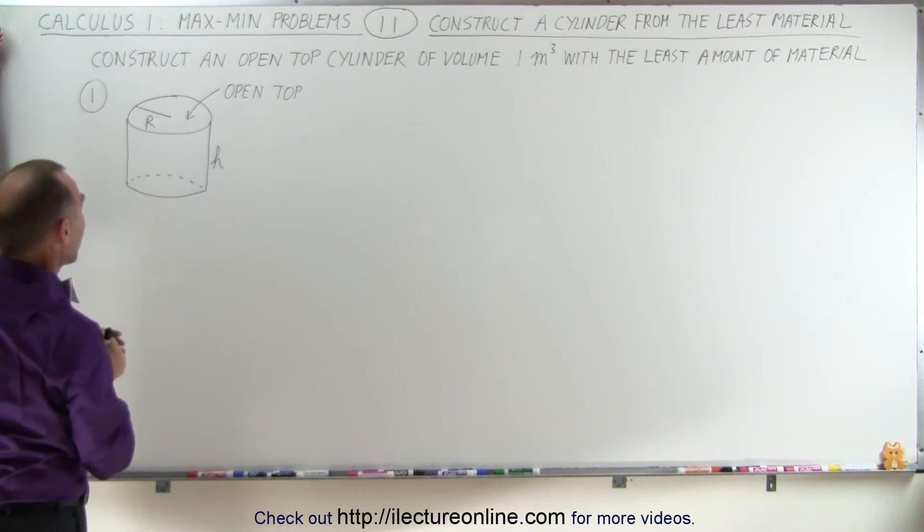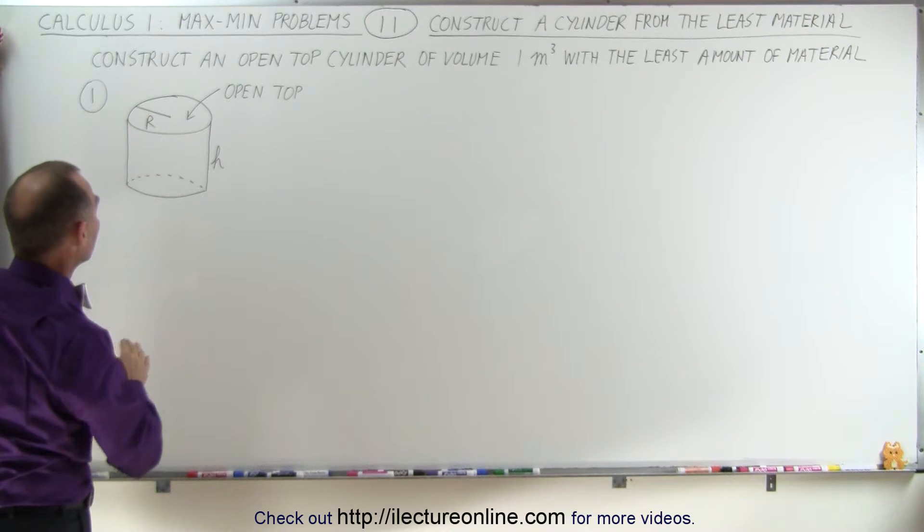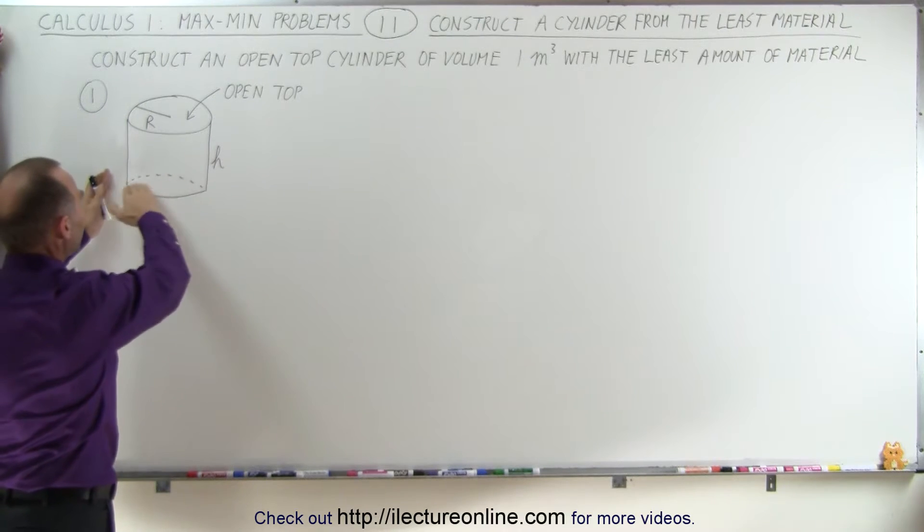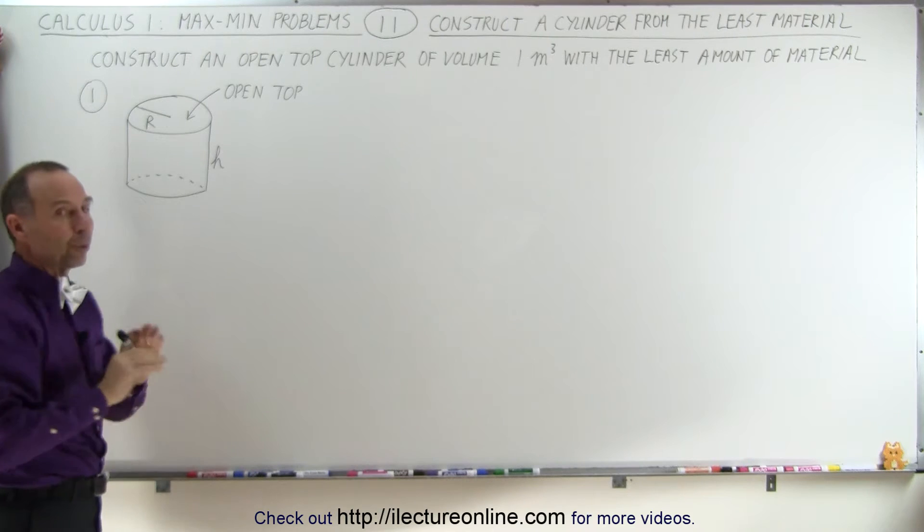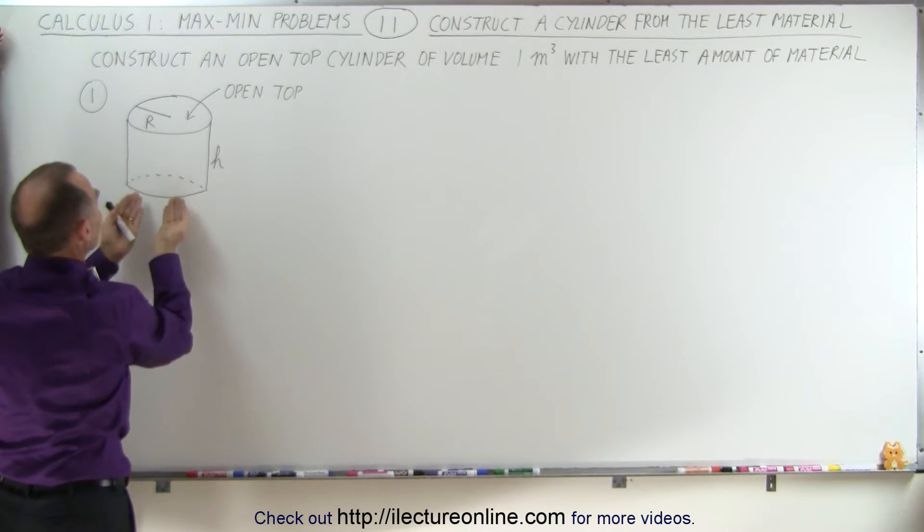Well, first of all, we started with drawing a diagram, and I've already done so. So here we have a cylinder, we have a bottom, but we don't have a top to the cylinder, so we only need materials for the side and the bottom.